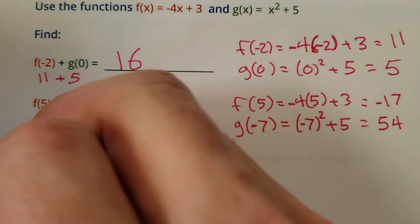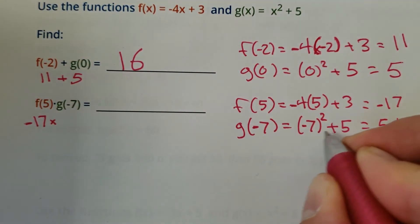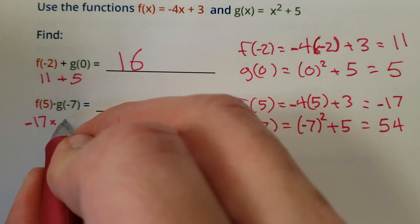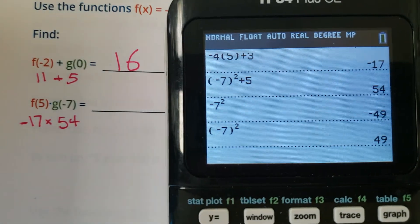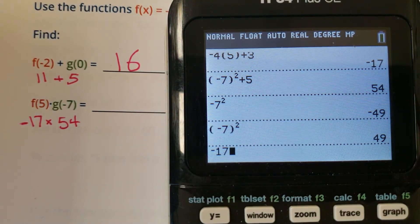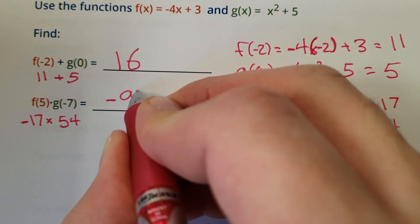All right. We plugged in a 5, we got negative 17. Then we plugged in a negative 7. Negative 7 squared plus 5 was 54. All right. Negative 17 times 54. Let's see what we get here. Holy potatoes. Negative 918.